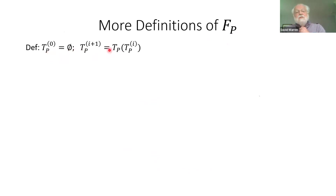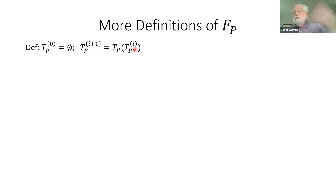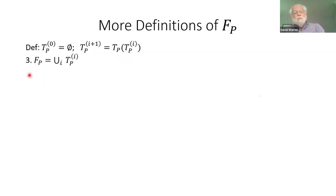We can define an iteration of the T_P operator: the zeroth iteration is the empty set, and the (i+1)-th iteration is applying T_P to the i-th iteration. F_P is then the union of all of these iterated T_P applications — applying T_P to the empty set again and again and unioning all results together.